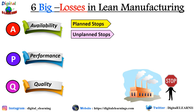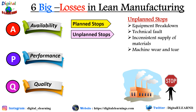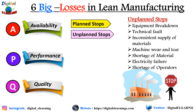The other loss under availability is unplanned stops. These are not scheduled but happen suddenly during running operations. They can be due to equipment breakdown or technical fault, inconsistent supply of material, machine wear and tear, electricity failure, shortage of material, or shortage of operators. These are unplanned stops.